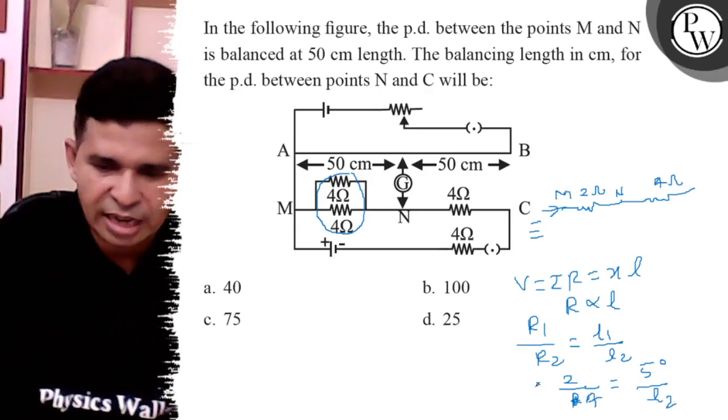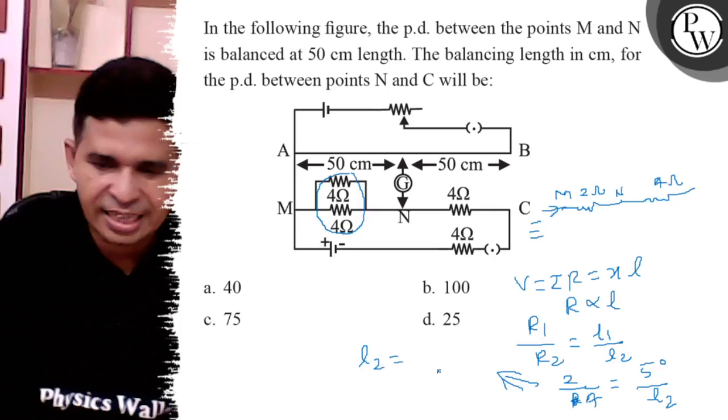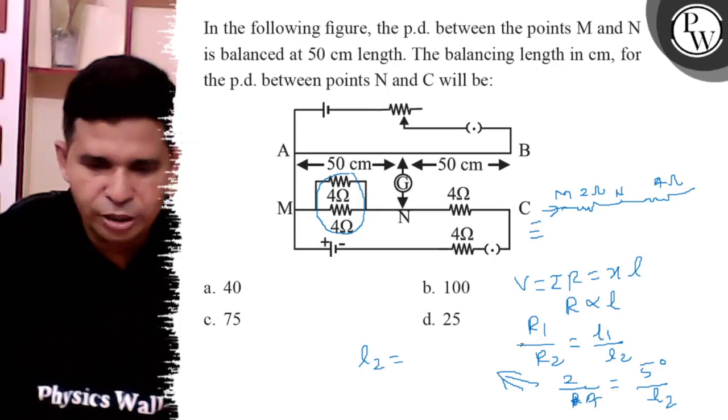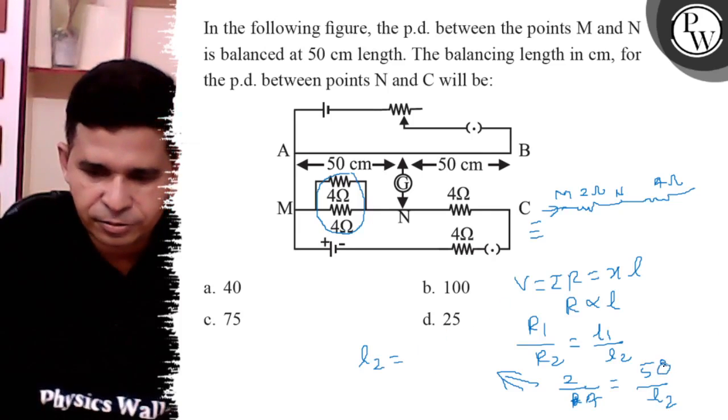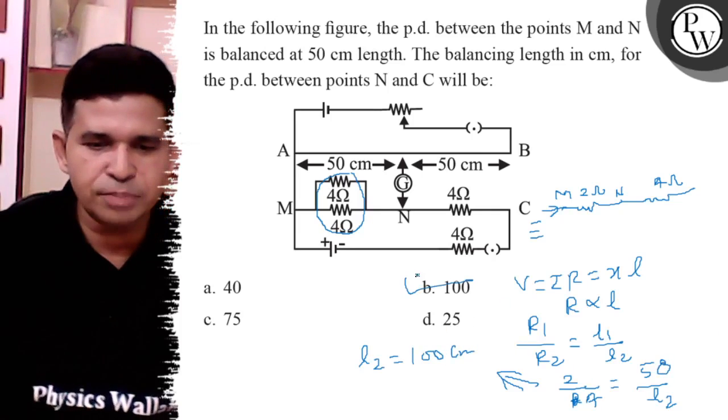So what is the final answer? L2 is 1 by 2, 2 into 50, so it is 100 cm. So the final answer is B.